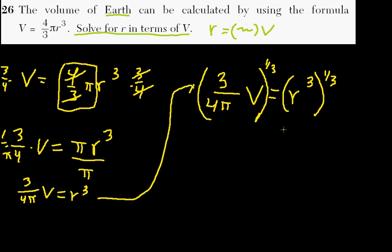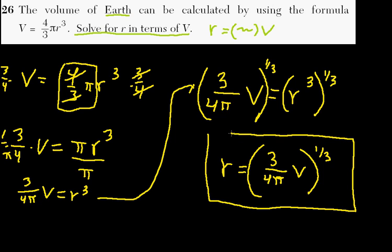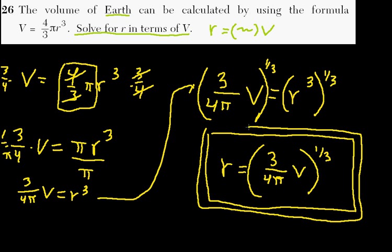So the answer here is going to be r equals three over four pi times volume, all this to the one-third power. That's it. That's the answer. We have algebraically solved this equation.